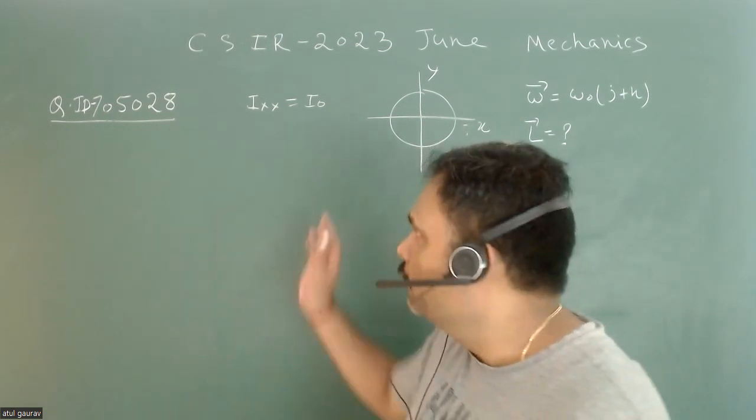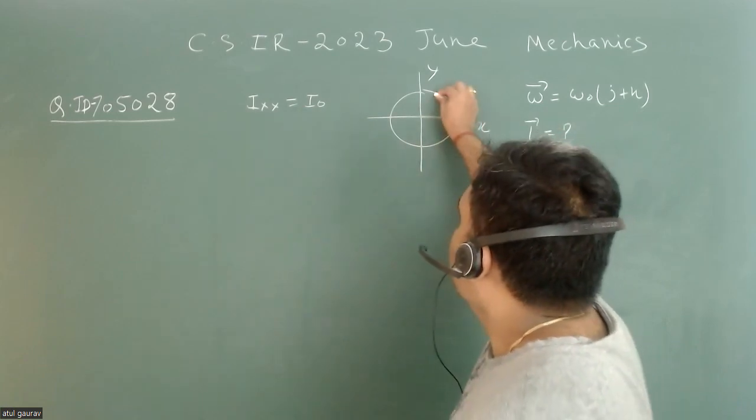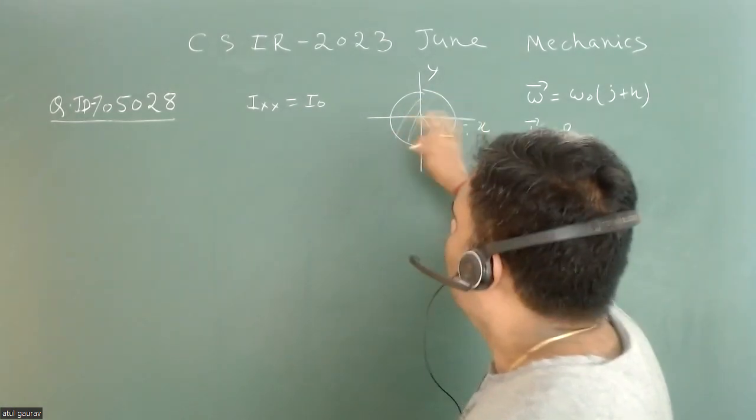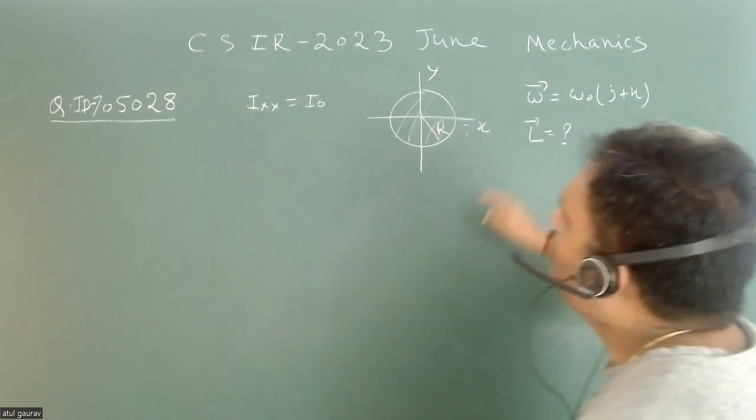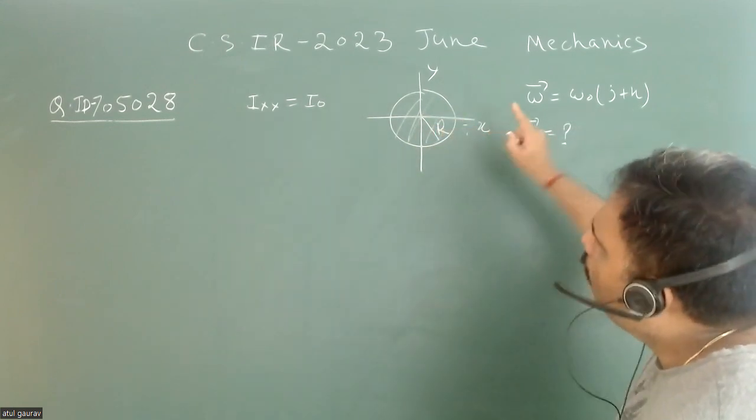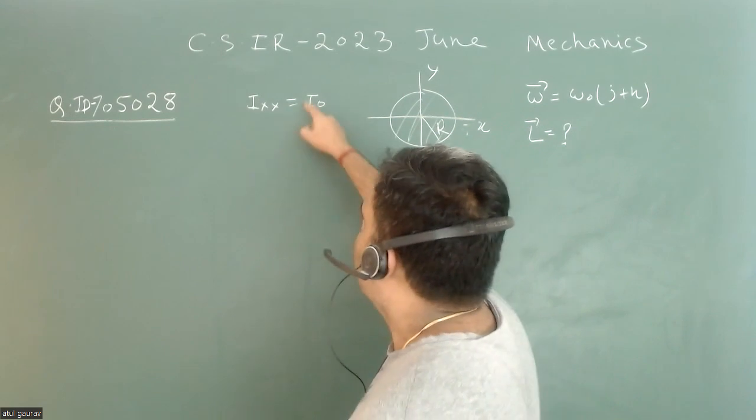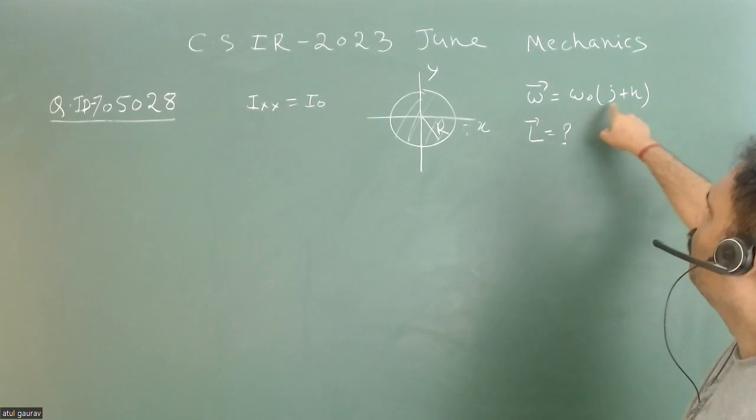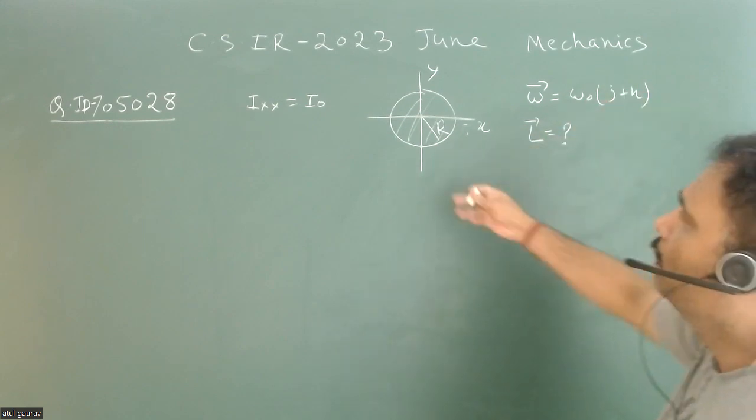There is a disc with radius r. What's given is the moment of inertia about the x-axis, which is I₀, and the whole disc is rotating with an angular velocity ω₀ that is j plus k vector.